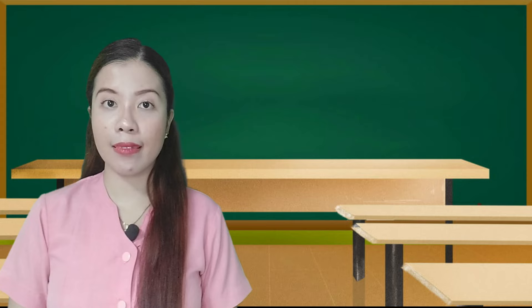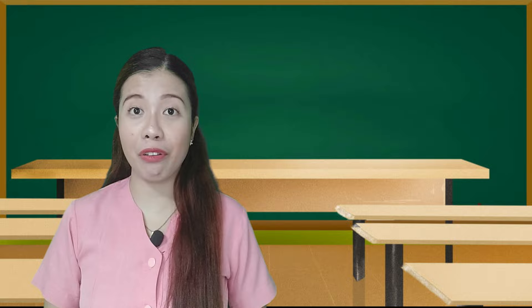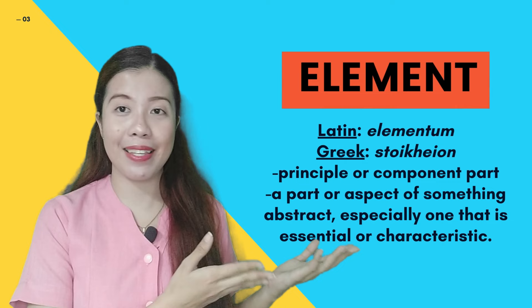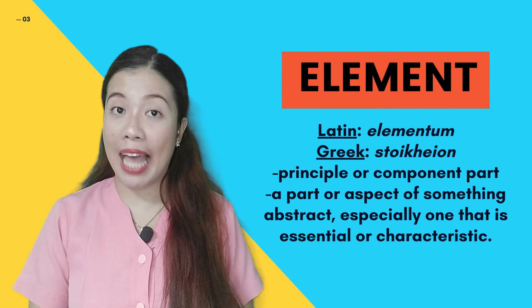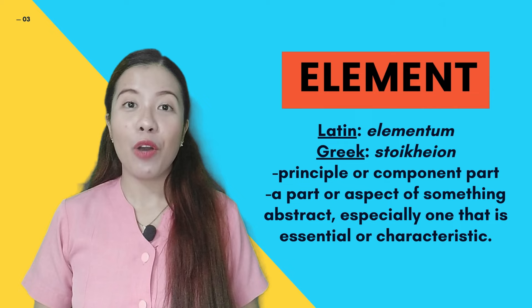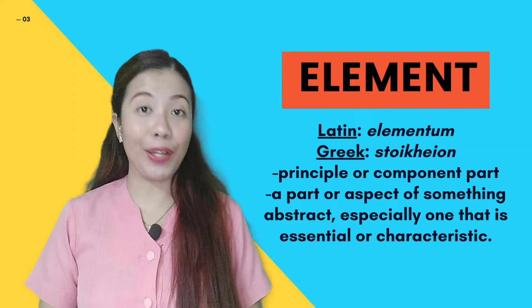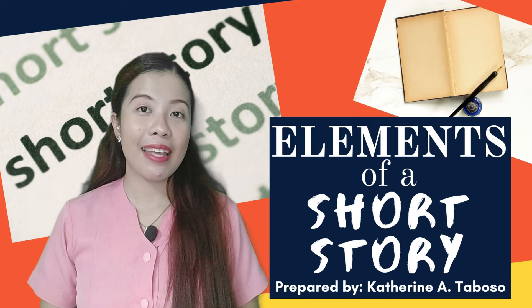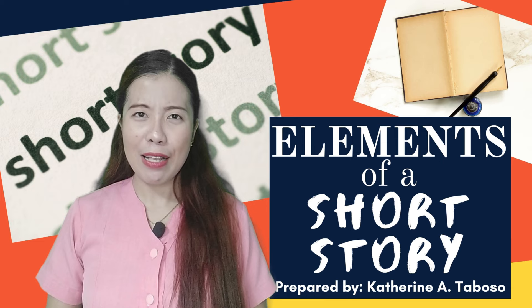Before we talk about what comprises a short story, let us first identify and define what the word 'element' means. Element originates from the Latin and Greek words 'elementum' and 'techeion,' which both mean principal or component part. Therefore, in our lesson for today, we are going to identify the component parts, or the elements, of a short story — and how could we make a short story?